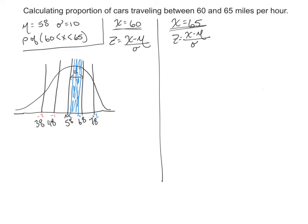Okay, so we're going to use our z equation again, z equals x minus mu divided by standard deviation. So let's start with the lower end first. Let's use the speed of 60, let's do that one first.